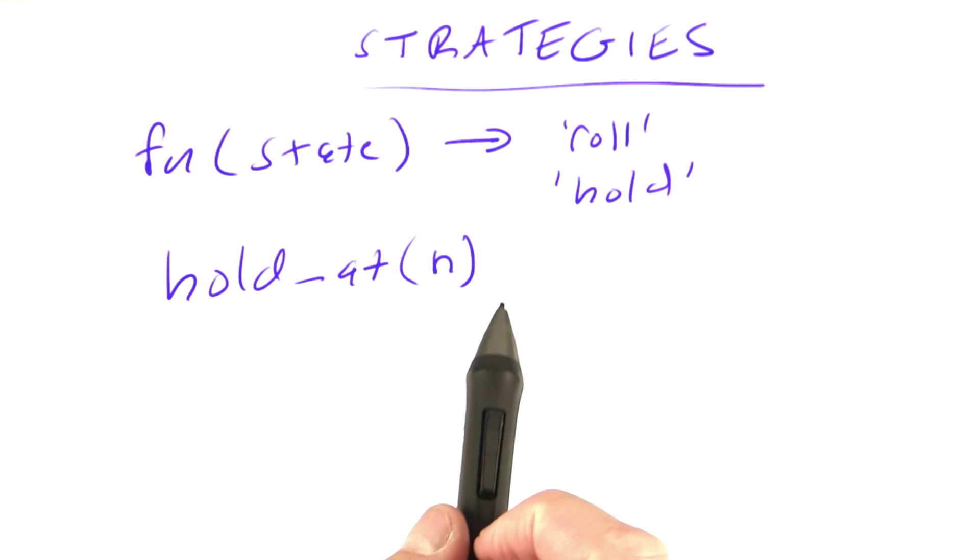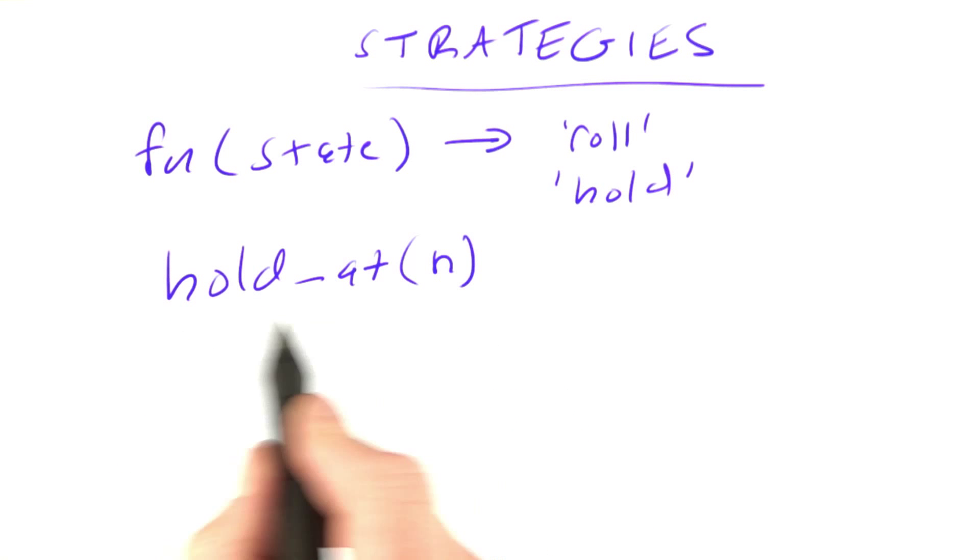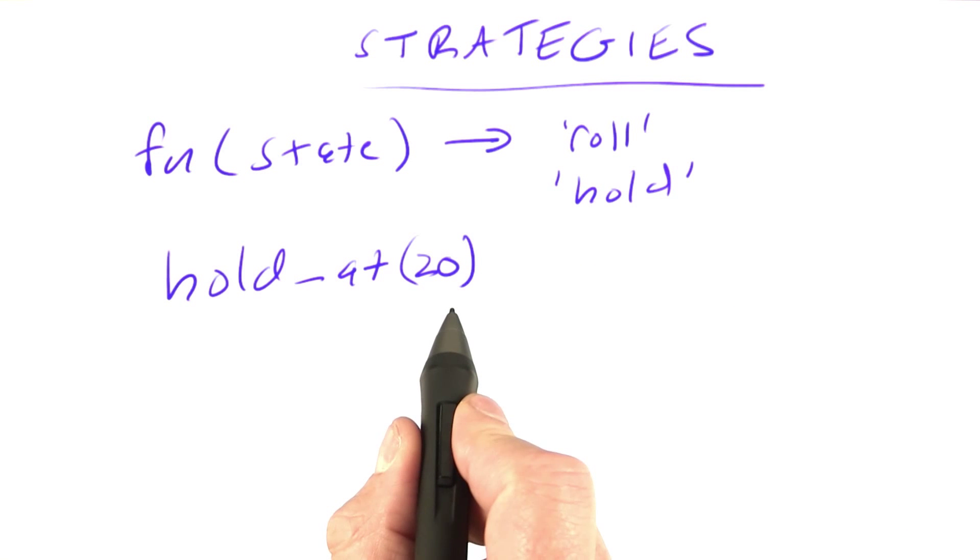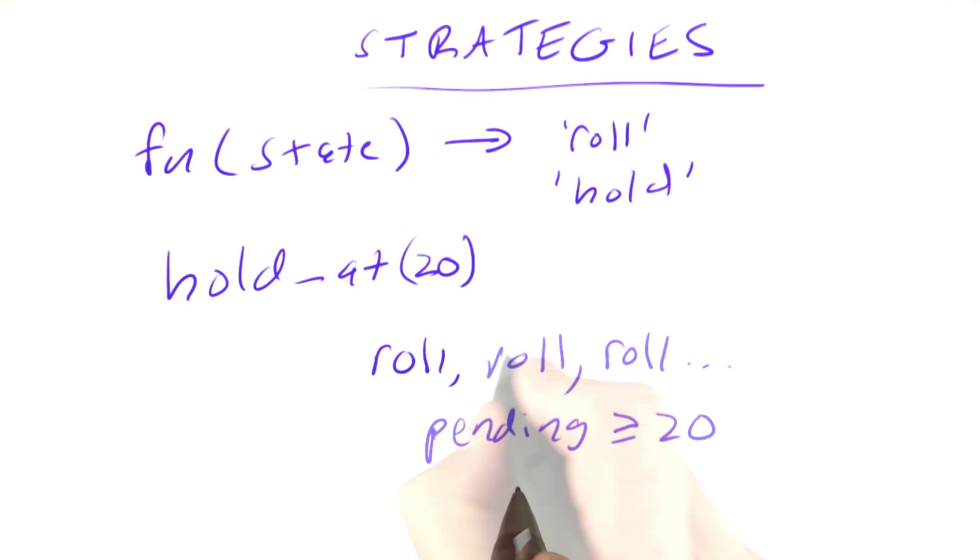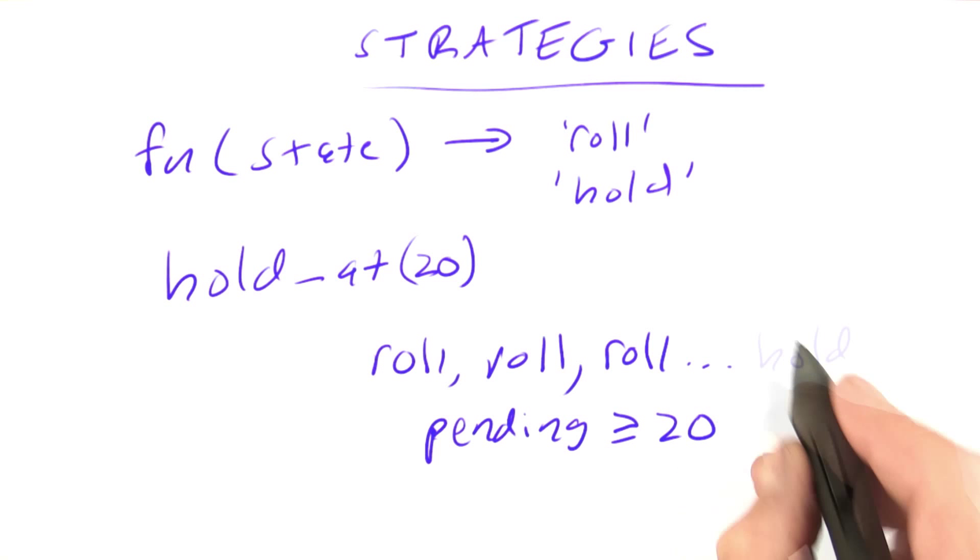Now I want to describe a family of strategies that I'm calling hold at n, where n is an integer. For example, hold at 20 is the strategy that keeps on rolling until the pending score is greater or equal to 20, and then it holds.